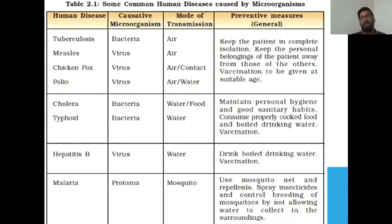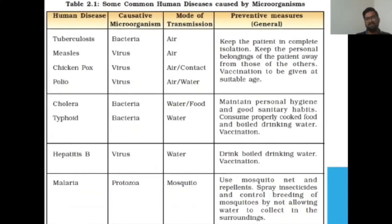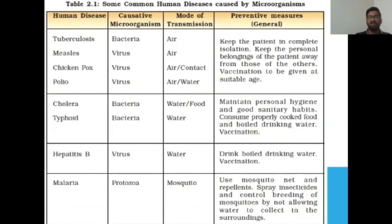Cholera is caused by bacteria and transmitted through water or food. Typhoid is also caused by bacteria and transmitted through water. To prevent these diseases, maintain personal hygiene and good sanitary habits, consume properly cooked food and boiled drinking water, and get vaccination at a suitable age.